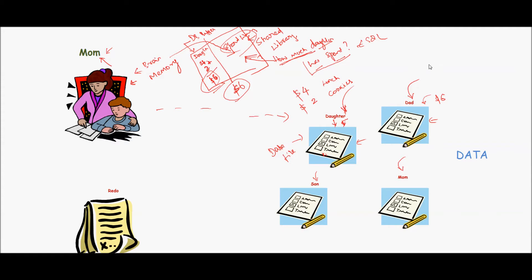She would say, honey, she spent six dollars. The data is there in the DB buffer and the question is there in the shared library, which in real world is the SQL. Since it's already there, she provides the data to dad.